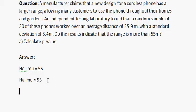Now we have to calculate the test statistic. It is Z equals x-bar, that is 55.9, minus 55, divided by the standard deviation which is 3.4, divided by square root of 30, which equals 1.45.